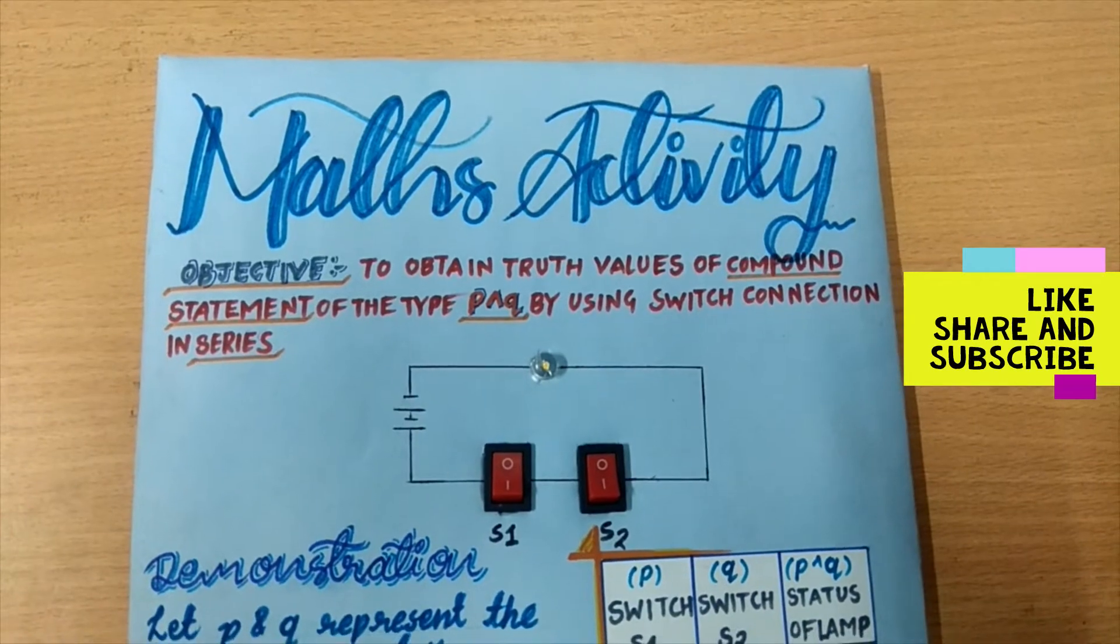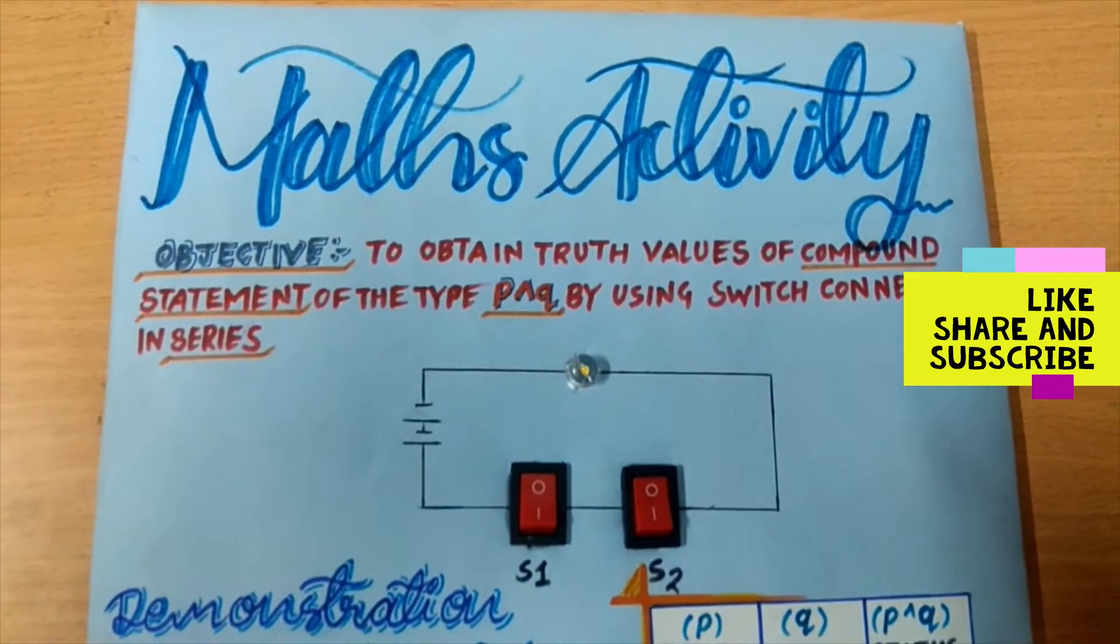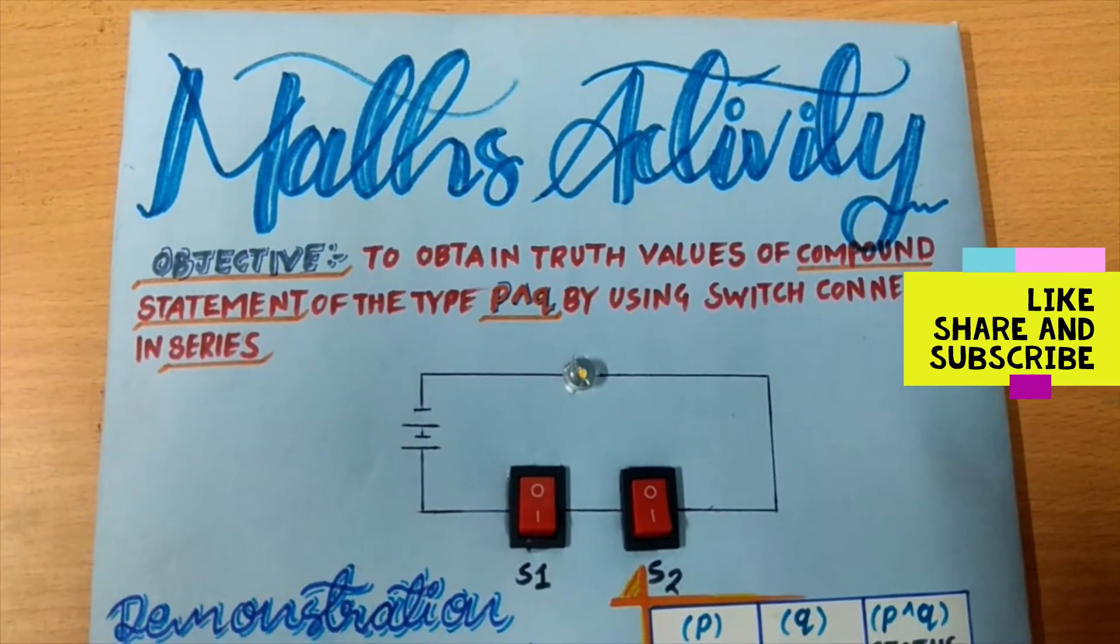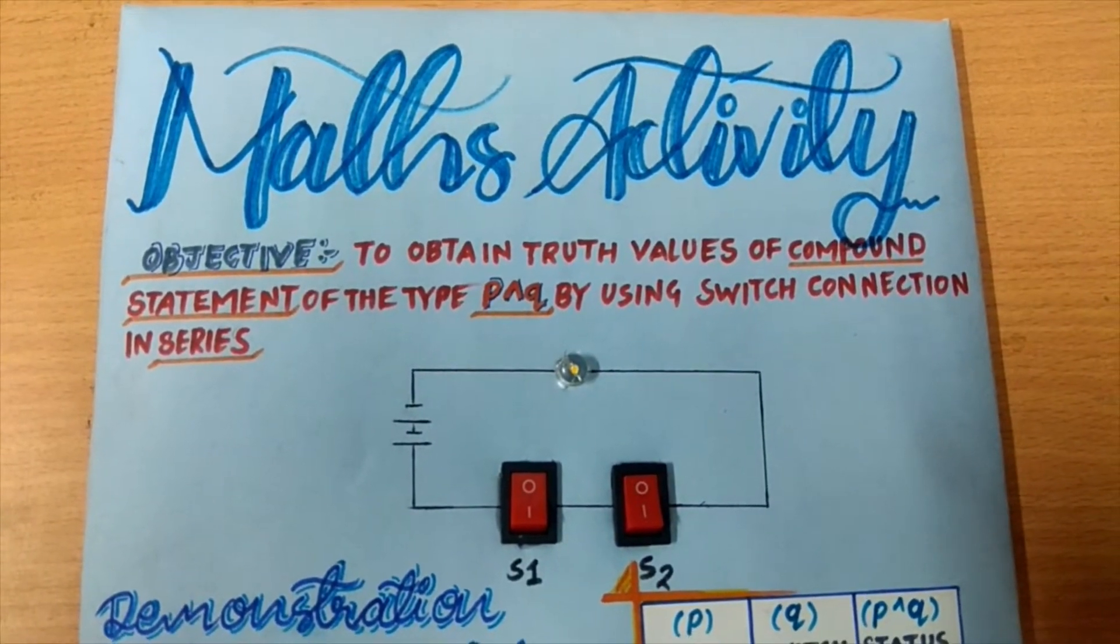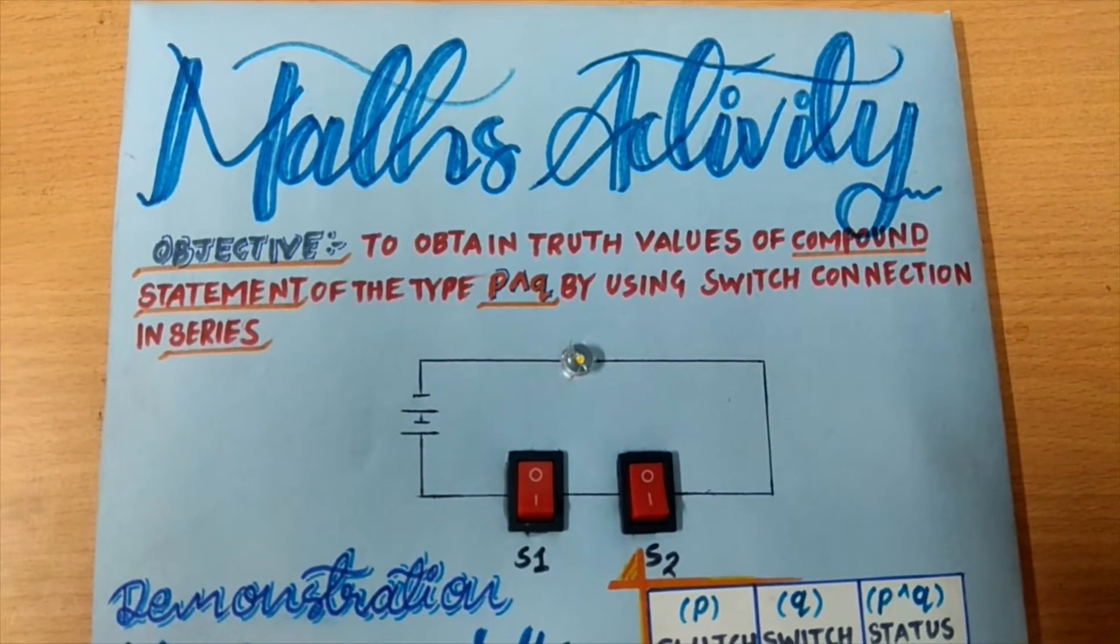So let us start. The objective of this activity is to obtain the truth values of compound statement of the type P and Q by using the switch connection in series.